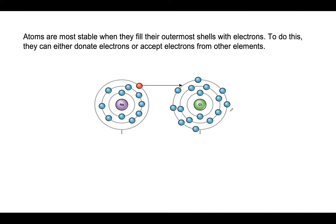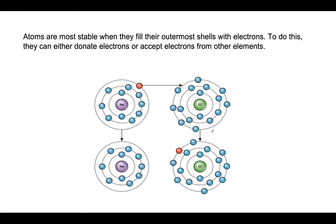In order to have a complete outer shell, chlorine just needs one more electron. It's not energetically favorable to lose all seven electrons — it's far more favorable to gain one electron, complete the outer shell, and reach the most stable state.